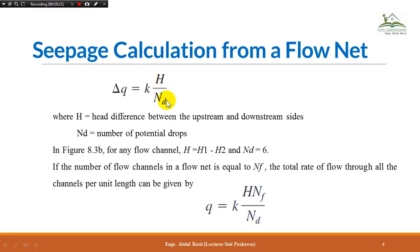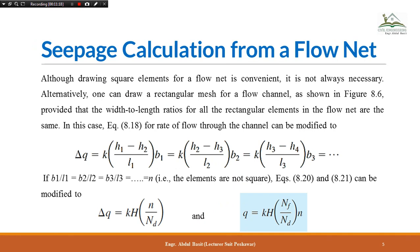Moving ahead, we now expand to multiple flow channels. If there are multiple flow channels — two, three, four, five, and so on — we add the number of flow channels Nf. The final equation becomes q = k·h·(Nf/Nd), where Nf is the number of flow channels, Nd is the number of potential drops, and h is the head difference between upstream and downstream sides.